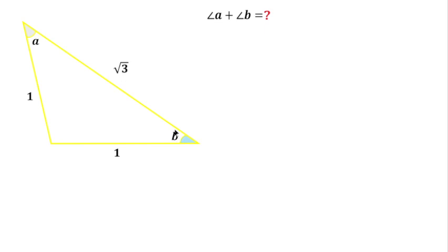To solve this question, as we can see this triangle is an isosceles triangle because these two sides are equal. And I will use the cosine rule to find the sum of these two angles.